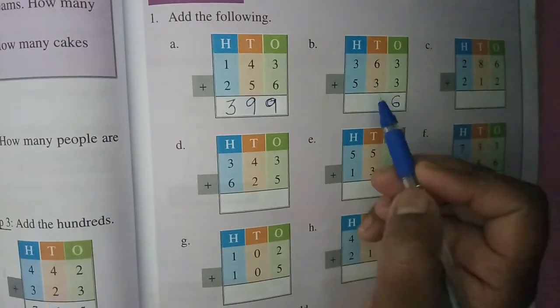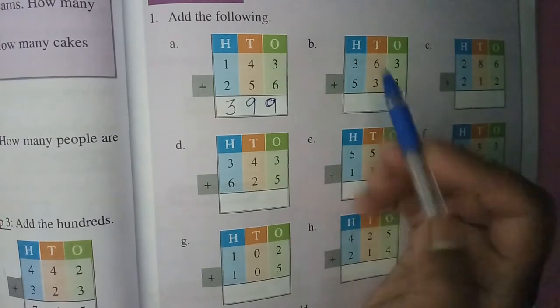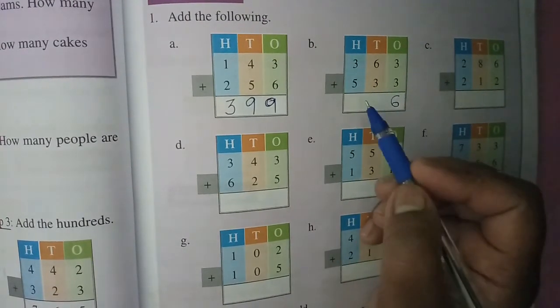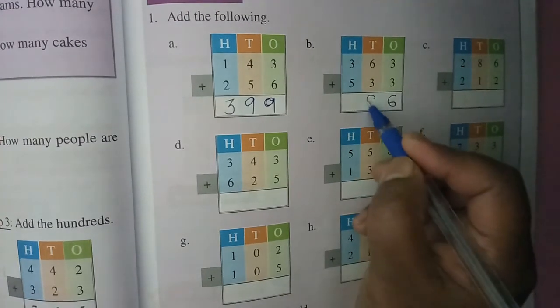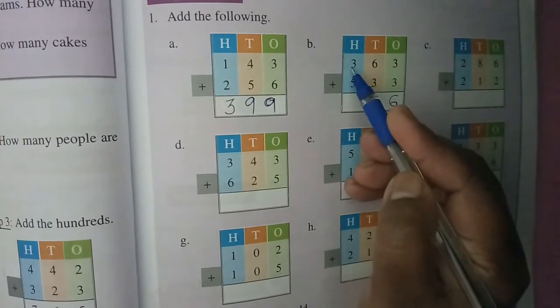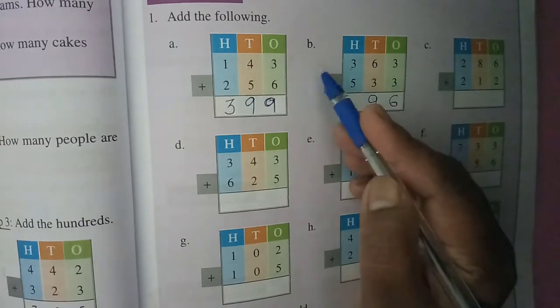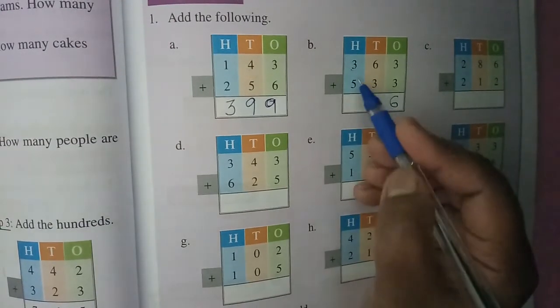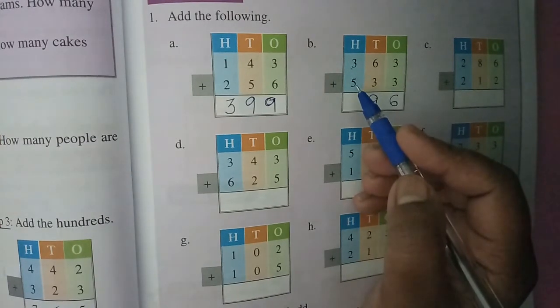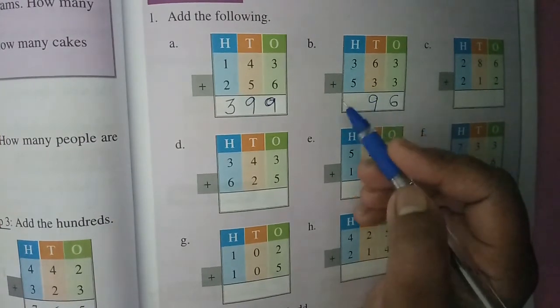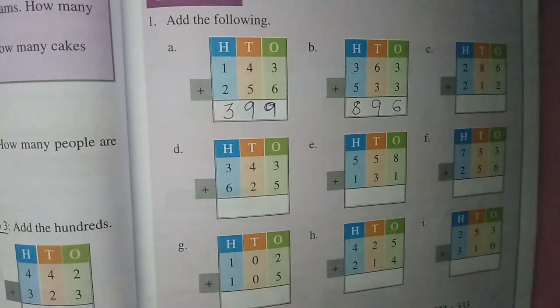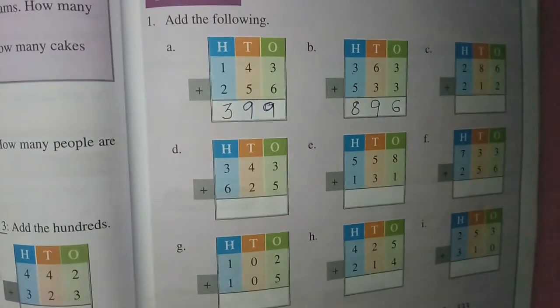The next number, that is six and three. Six in the mind, three on the finger. After six: seven, eight and nine. Same way, three in the mind and five on the finger. After three: four, five, six, seven and eight. Like this, children, we can add.